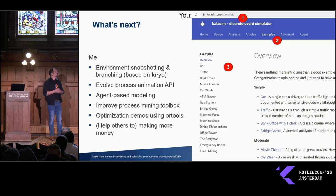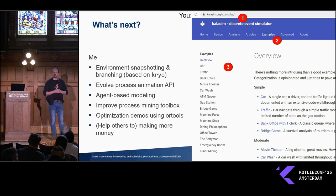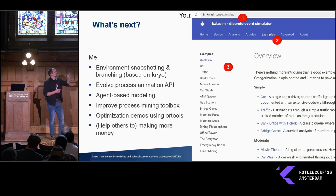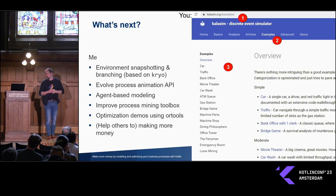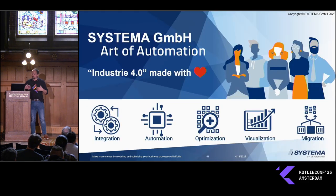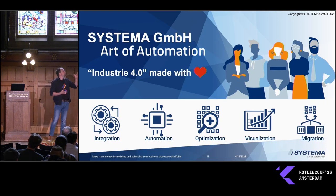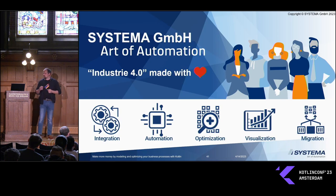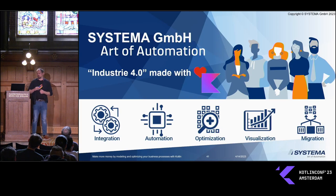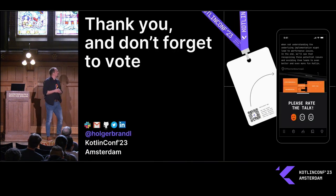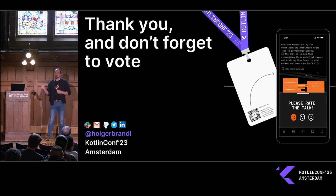The biggest fun — and what's actually the top of the agenda — is using the library to help others make more money and run their businesses more efficiently. For your next step you could go to the website's example section: we have ferrymen shipping people from one bank to the other, philosophers sitting around a table trying to eat, movie theaters, banks — lots of fun examples to get into the mood and into the API. With this, I would like to thank you for joining my presentation. I hope I could give you an idea about how we use simulation in an industrial manufacturing context, and we do this not just with love, but more and more using Kotlin. Thanks for being here. Don't forget to vote. You can find me on Kotlin Slack, via email, GitHub, and LinkedIn.